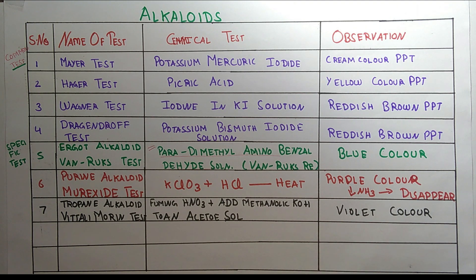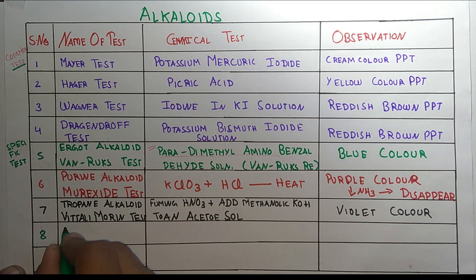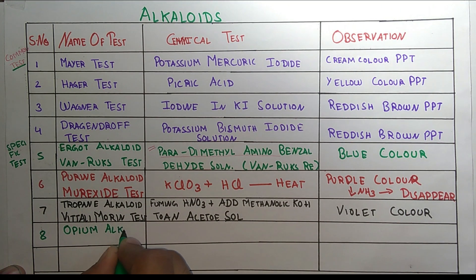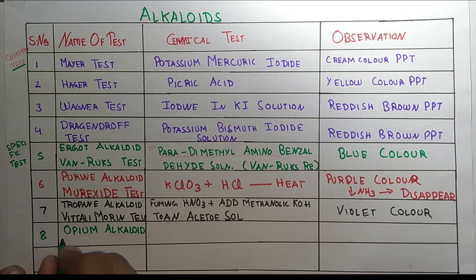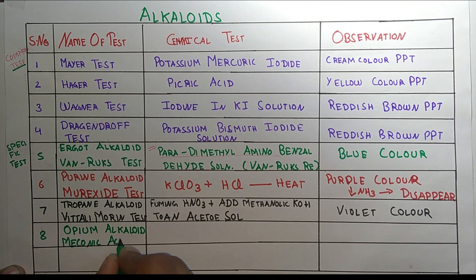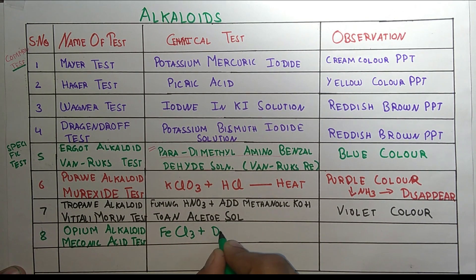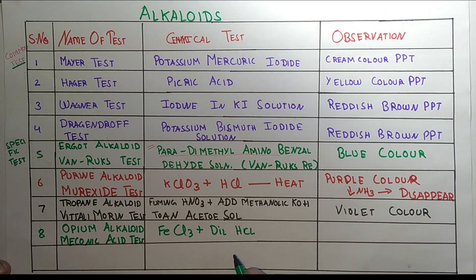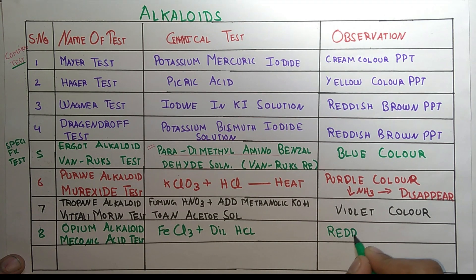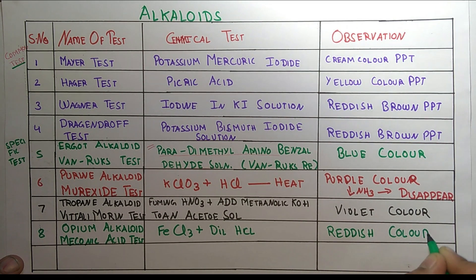The next test is for opium alkaloids. The name of the test is the Meconic acid test. The procedure uses FeCl3 plus dilute HCl, and the color produced is reddish color. This is the Meconic acid test for opium alkaloids.